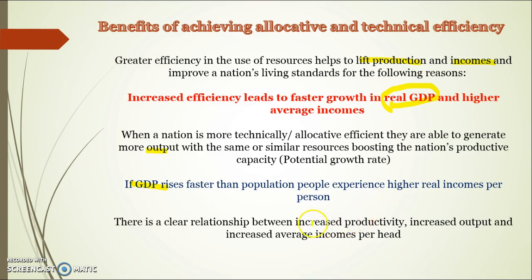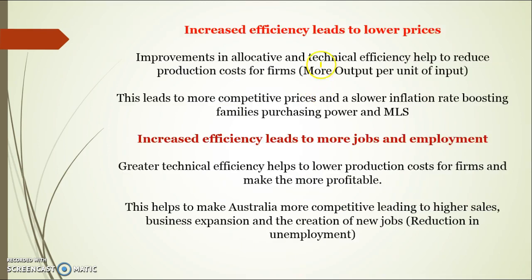The key relationship is: increased productivity leads to increased output, which leads to higher average incomes, assuming output grows faster than population growth. Increased efficiency also leads to lower prices because we're generating more output per unit of input, which helps slow inflation and boosts purchasing power. It also leads to more jobs because lower production costs make firms more competitive, leading to higher sales, increased aggregate demand, business expansion and less unemployment.